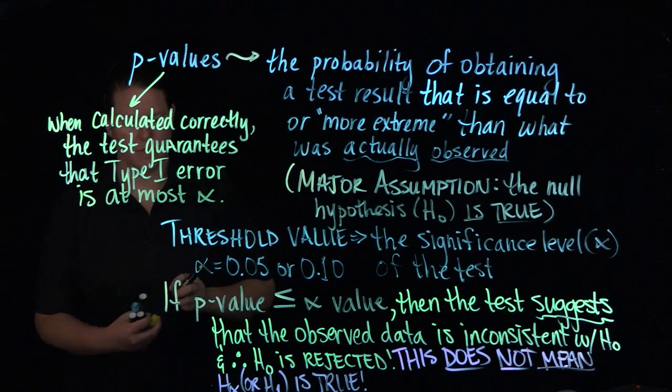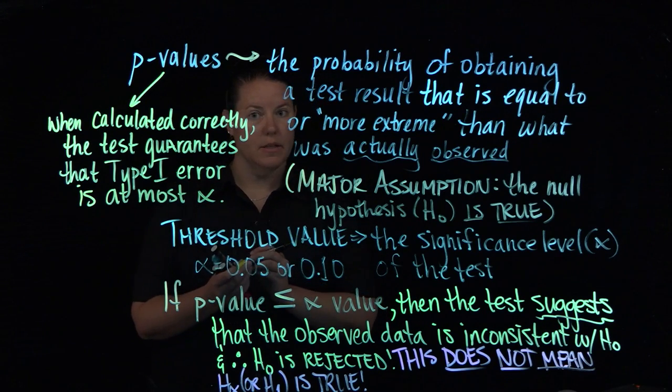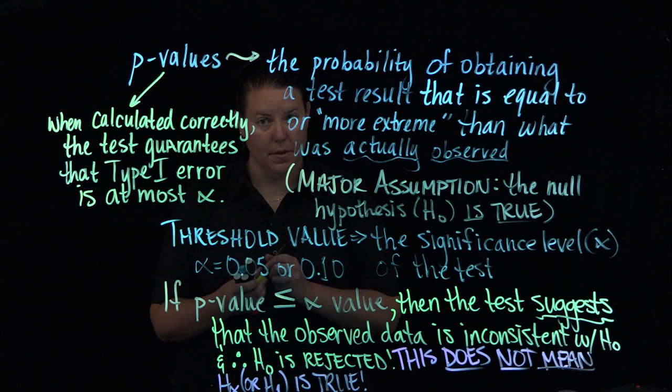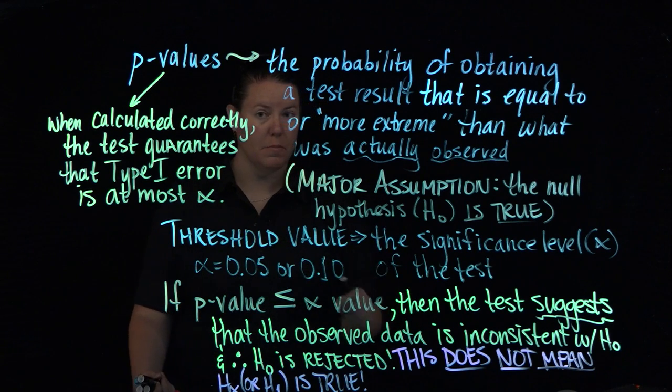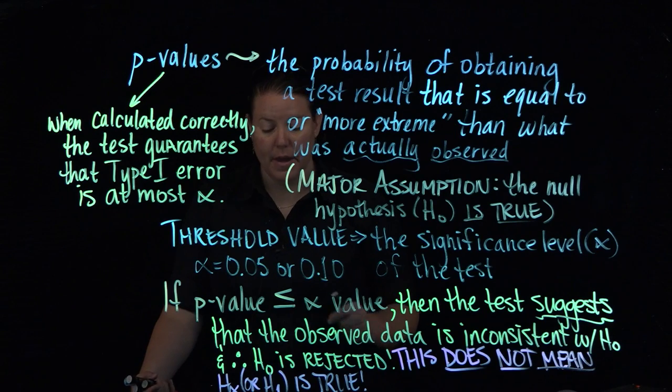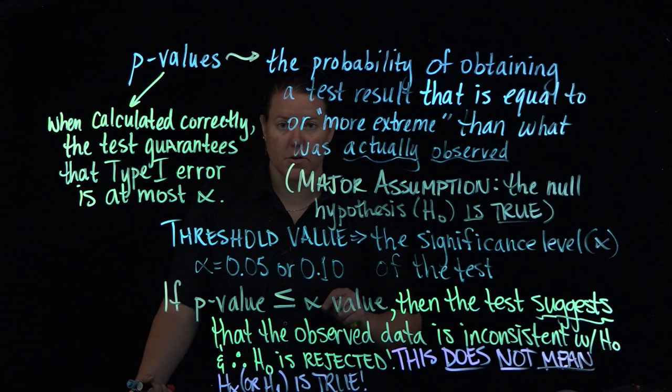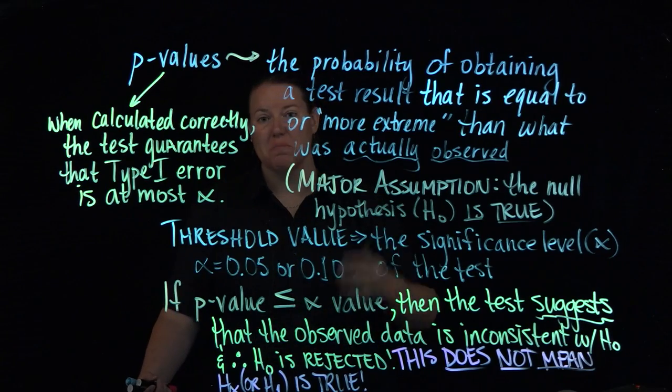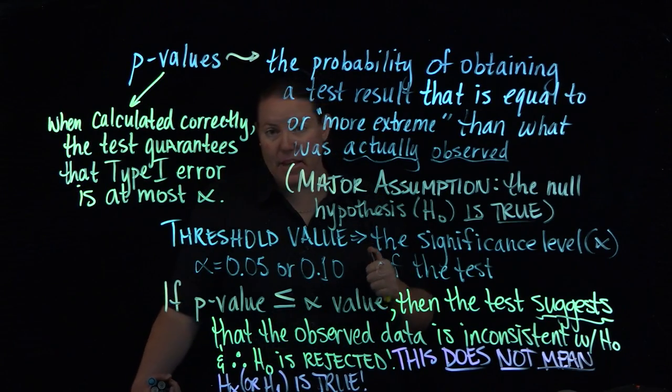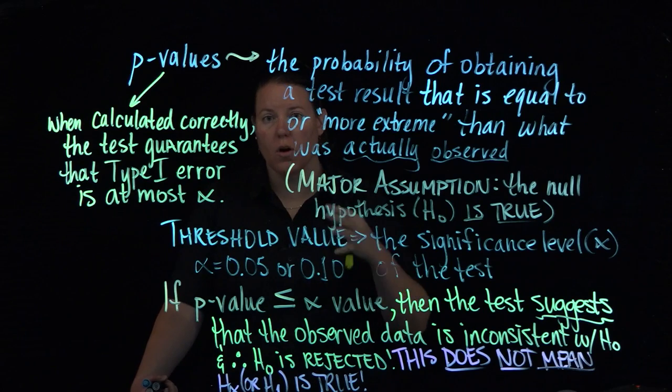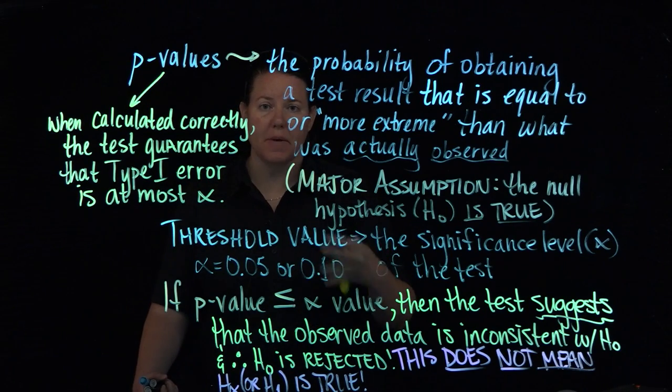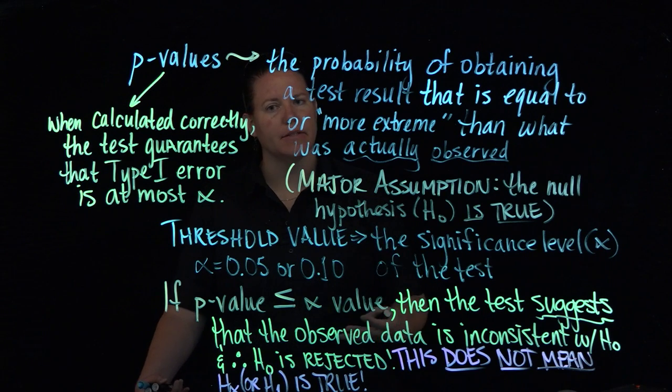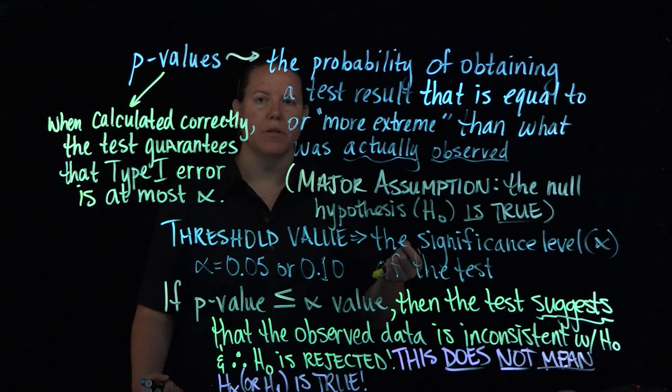The type 1 error is at most alpha, the significance level. That means that, like I said, there's still a possibility that the null is true. It's still a possibility that the alternative hypothesis is false. Even if you get a p-value that is much, much less than the alpha value, you need more statistical information to be able to really say with some amount of confidence that the null can thoroughly be rejected.